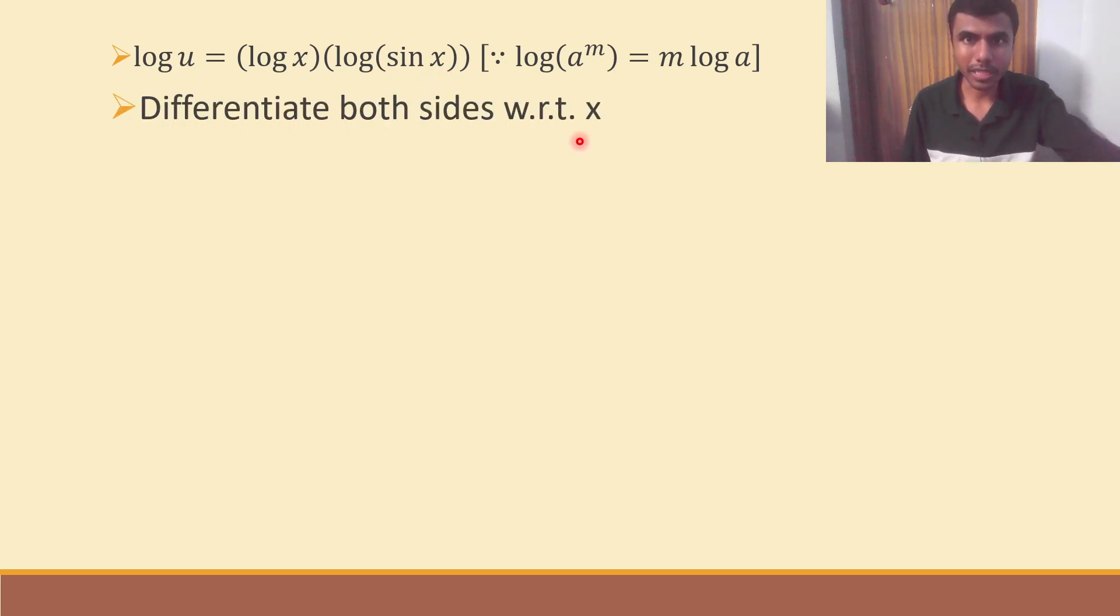Now, differentiate both sides with respect to x. Why? Because I need du by dx, means derivative of u. For that, we naturally need to differentiate. Now, listen. Here, there is log u. Derivative of log x is 1 by x. So, derivative of log u is 1 by u. But, here, I am differentiating log u, not log x. So, as per chain rule, I also need to write du by dx as well beside that. So, 1 by u into du by dx.